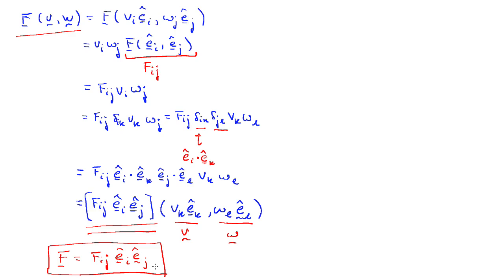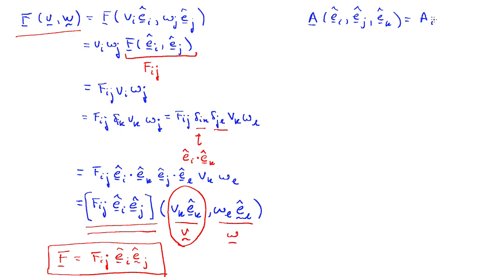This is very similar to writing a vector v as v_k ê_k in terms of its components. We can do the same thing with second-order tensors, and this extends nicely to higher-order tensors too. For instance, if I want the components of a third-order tensor A, I apply it to three basis vectors to get components a_{ijk}. Alternately, I can write A directly in terms of those components and a triple dyadic product ê_i ê_j ê_k.